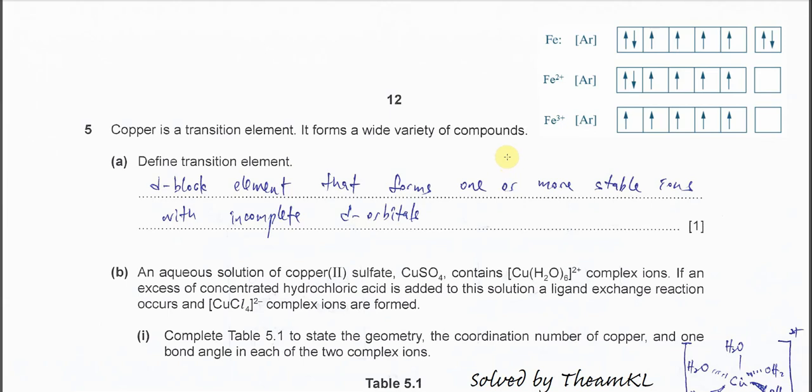Question 5. Copper is a transition element. It forms a wide variety of compounds. Part a: Define transition elements.